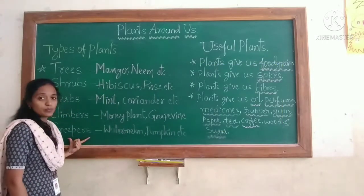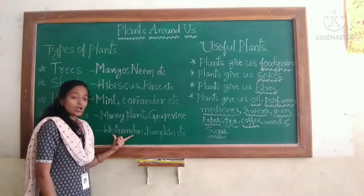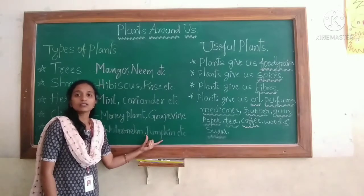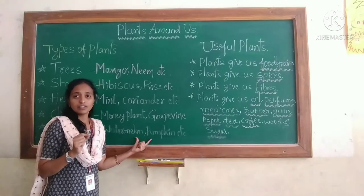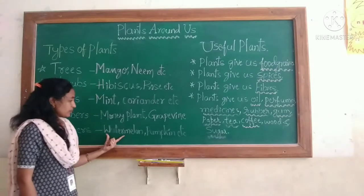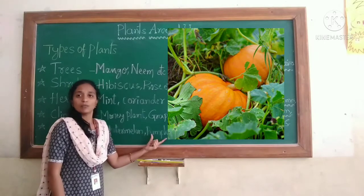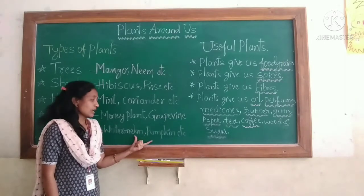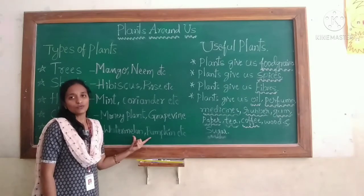Next, creepers. Plants like watermelon, pumpkin, and musk melon grow along the ground because they also have weak stems. Those plants are called creepers, and these creepers have heavy fruit.